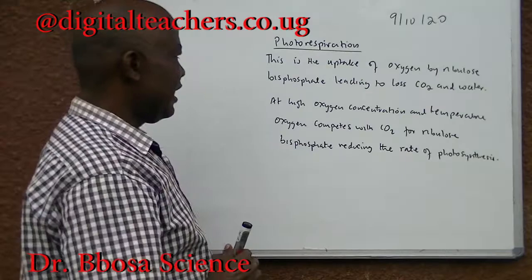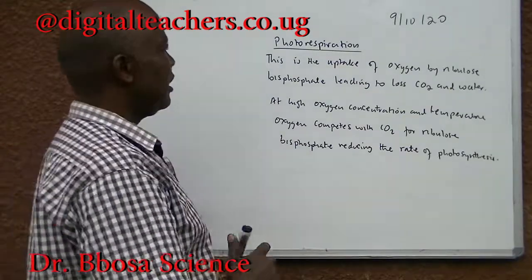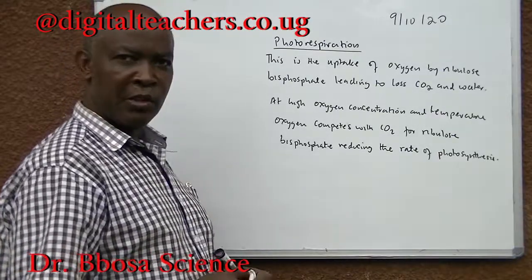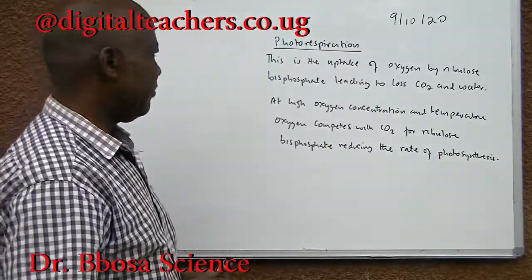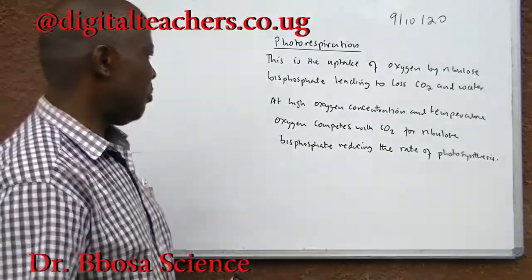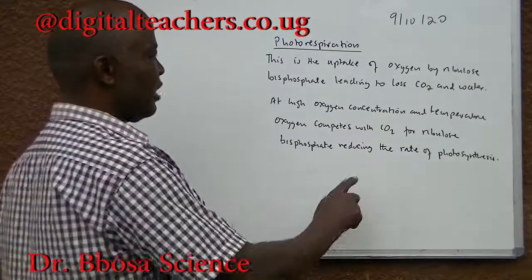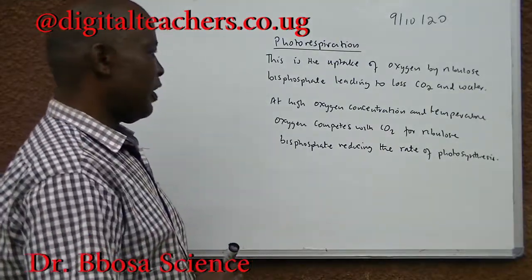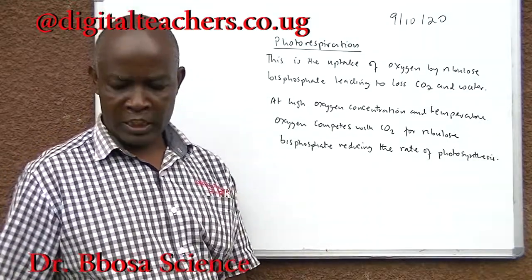Photorespiration is the uptake of oxygen by ribulose bisphosphate (RuBP), leading to loss of carbon dioxide, water, and energy. At high oxygen concentration and temperature, oxygen competes with carbon dioxide for RuBP. This reduces the rate of photosynthesis.